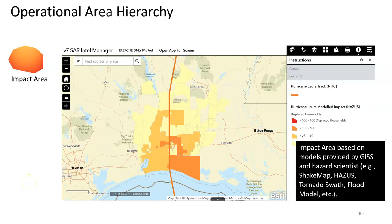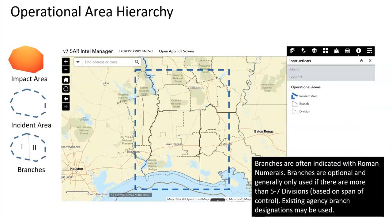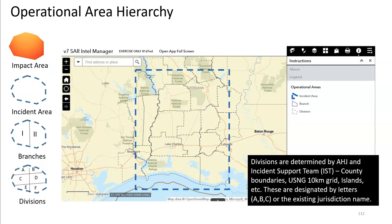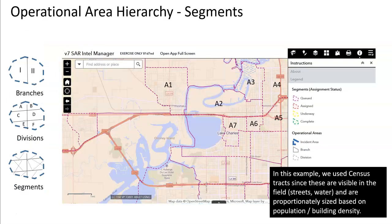In the training slides and previous videos we talk about breaking down our impact area into a couple of different areas: our overall incident area, branches when there's a large incident area, divisions which are typically lettered, and segments. Segments are created by task forces to break down divisions into bite-sized chunks, typically for a squad to finish in one operational period.